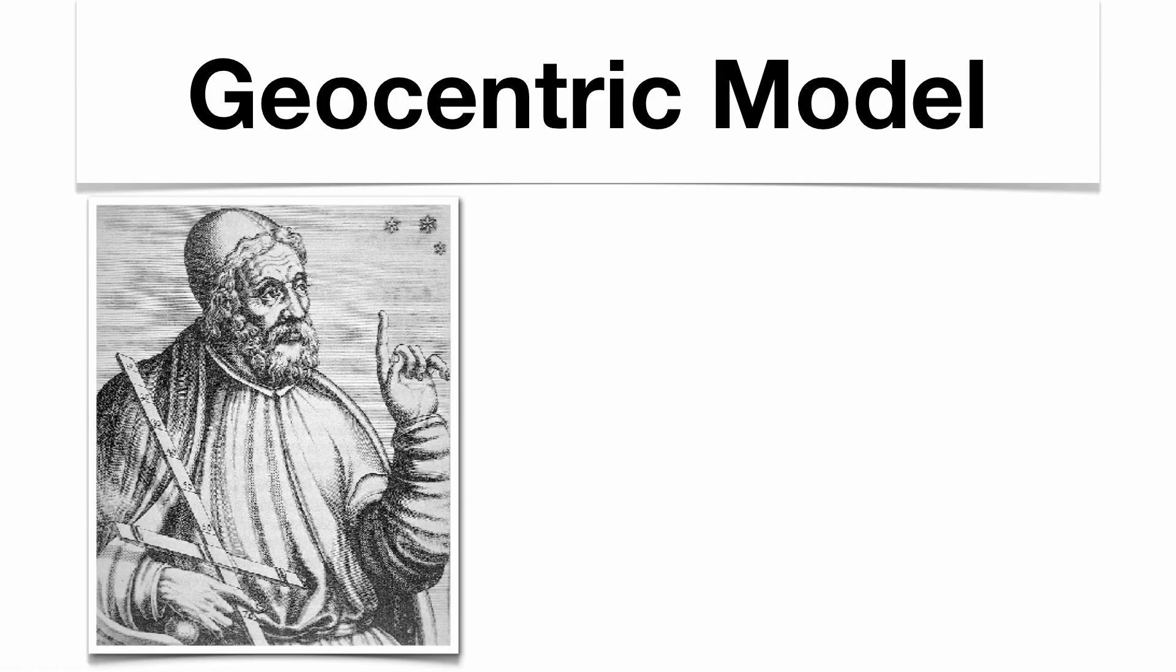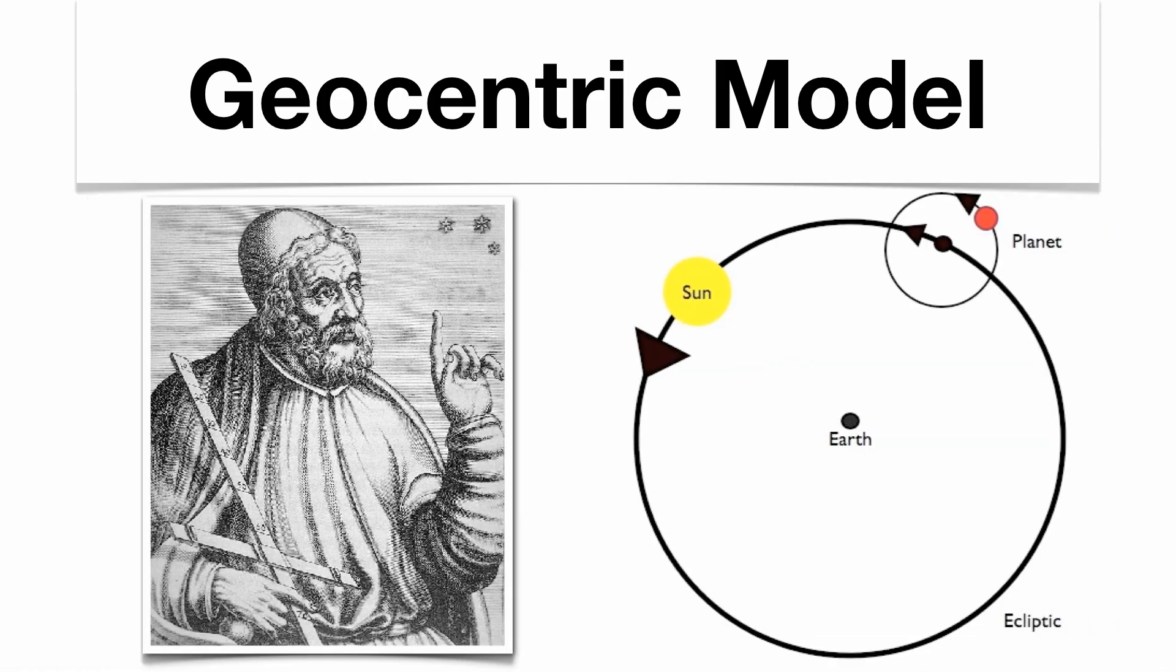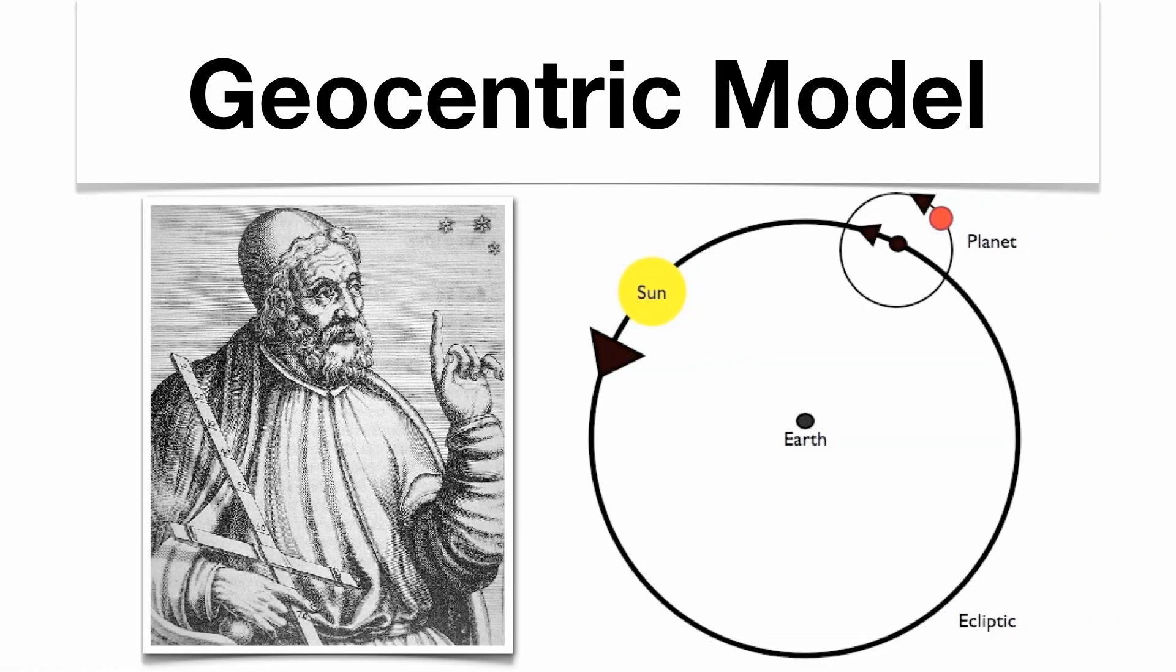This idea was first determined by an ancient astronomer called Ptolemy, and as the objects moved around the Earth, the planets would also move in these circular motions called epicycles. Now this model was extremely complex and very difficult to prove, although it was widely accepted.